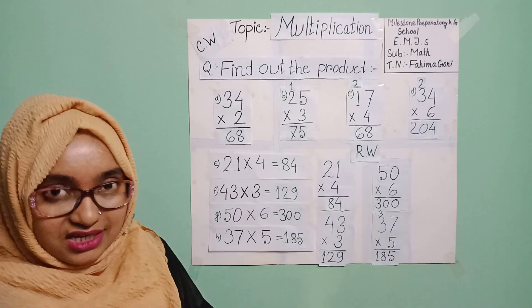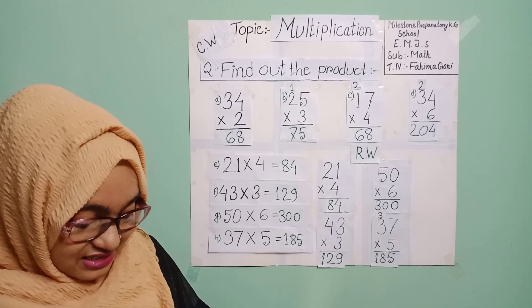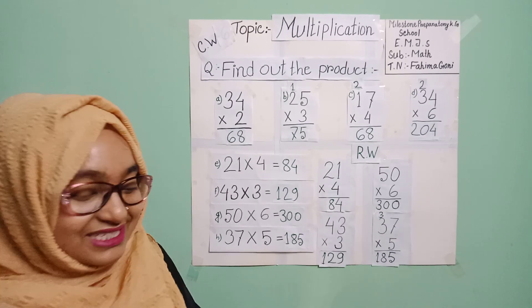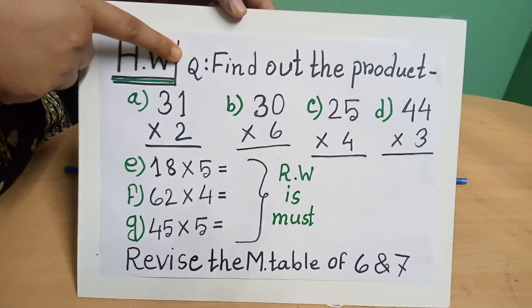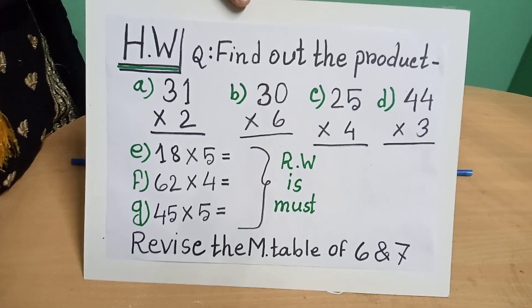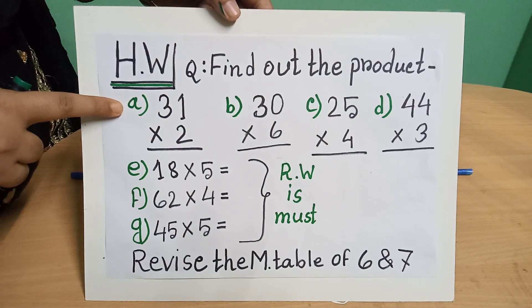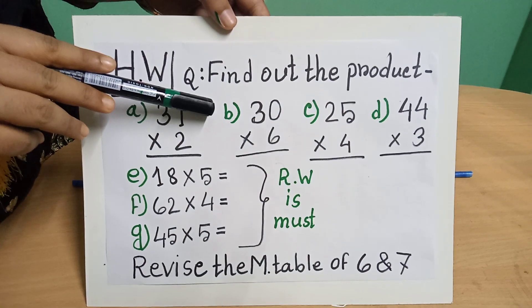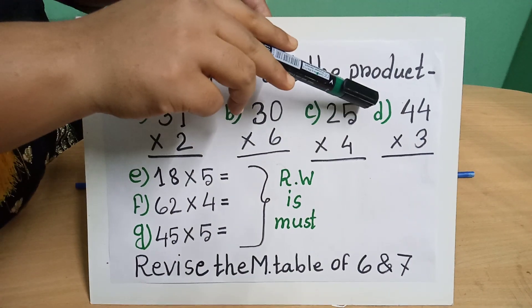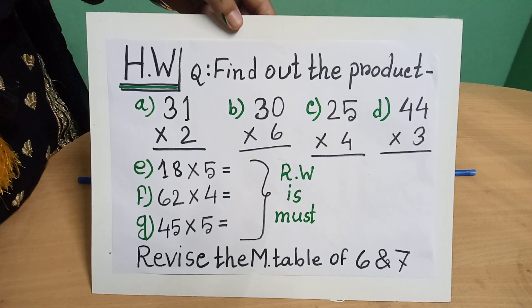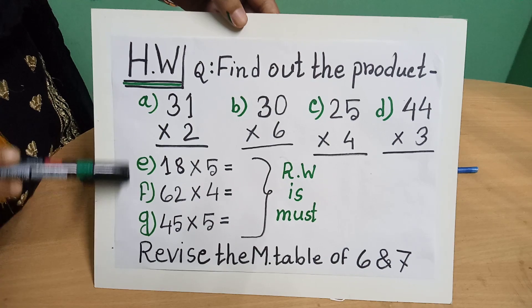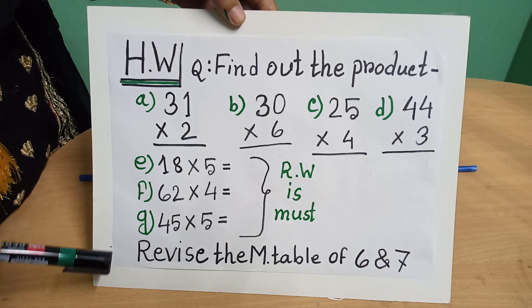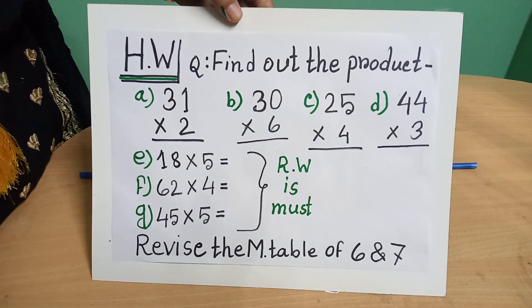Okay students, I hope all of you have understood the class. Now it is the time for homework — please look at it. You will write the question 'Find out the product,' then do problems A, B, C and D in the vertical way, and problems E, F and G in side by side where you must show the rough work.